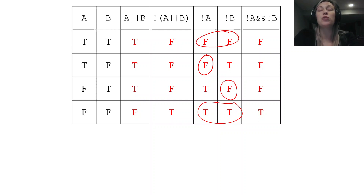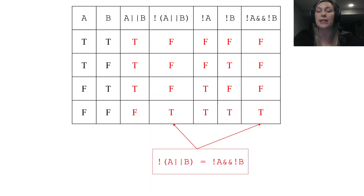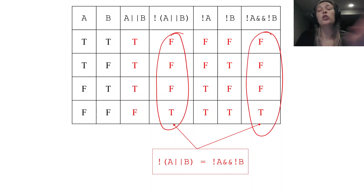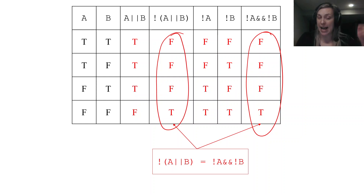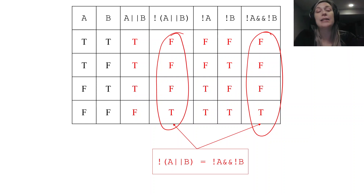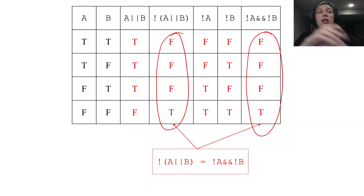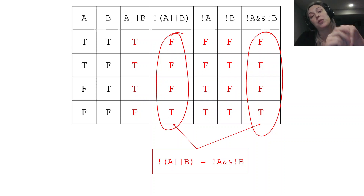Now I want to draw your attention to two columns that are the same: the 'not (A or B)' column and the 'not A and not B' column — both read false, false, false, true. When two columns are the exact same in a truth table, that means they are logically equivalent: they evaluate to the same thing no matter what A and B might be. This is the first DeMorgan's Law: not (A or B) is logically equivalent to not A and not B.